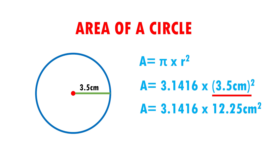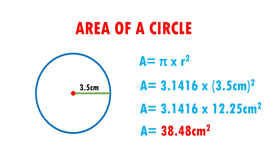Now, to find how much my area is, I have to multiply them. So the area equals 3.1416 times 12.25 centimeters squared, which is equal to 38.48 centimeters squared. This means that this circle can fit 38.48 squares of 1 centimeter per side.